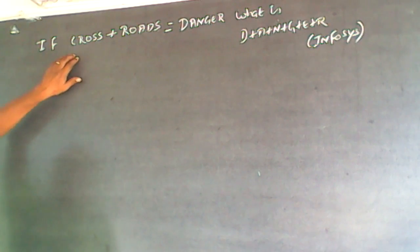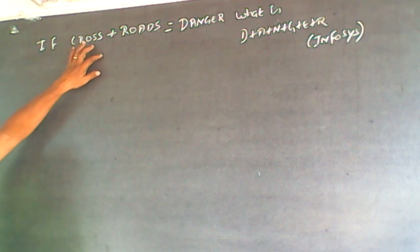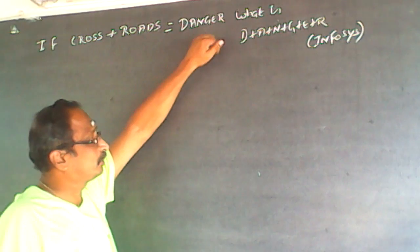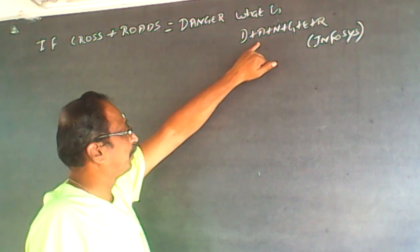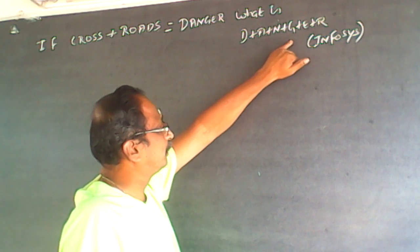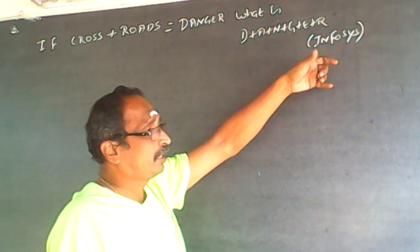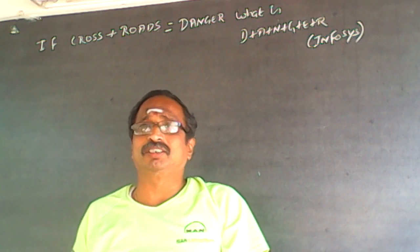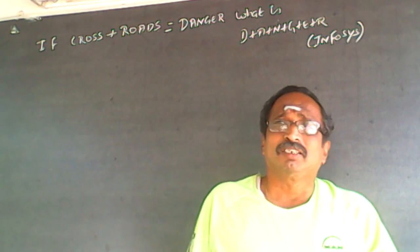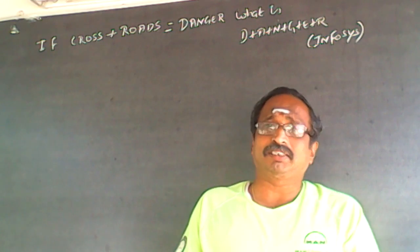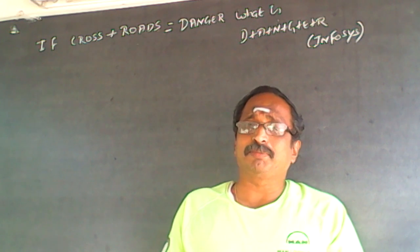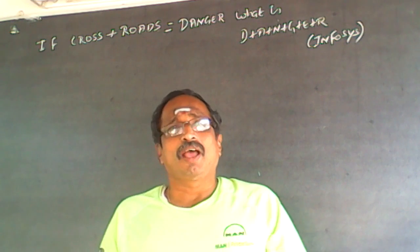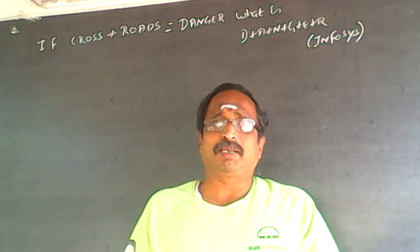The question is: if CROSS plus ROAD equals DANGER, what is D plus A plus N plus G plus E plus R? This question has been asked in placement tests. It can be classified as a cryptarithmetic problem, a verbal arithmetic problem, or an analytical arithmetic problem.